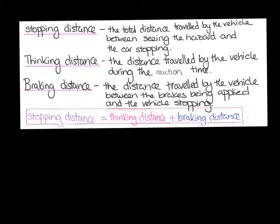We're now going to define some of our terminology. These definitions are important — you have to understand the difference between these different distances. The stopping distance is the total distance travelled by the vehicle between seeing the hazard and the car stopping. The thinking distance is the distance travelled by the vehicle during the reaction time. The braking distance is the distance travelled by the vehicle between the brakes being applied and the vehicle stopping.